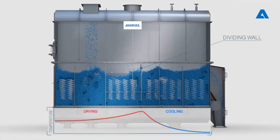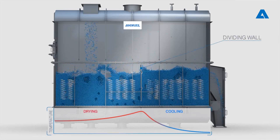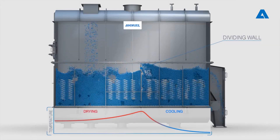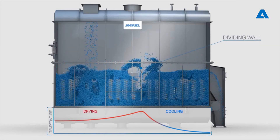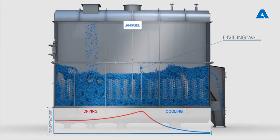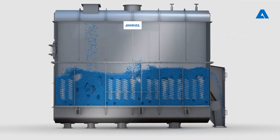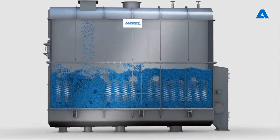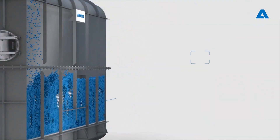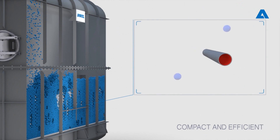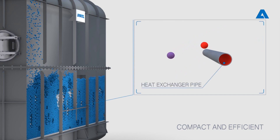Dividing walls in the product chamber prevent backflow of the product in order to optimize the temperature profile along the length of the unit. A highly efficient and compact layout is achieved by combining convective heat transfer by the air and conductive heat transfer by the in-bed heat exchangers.